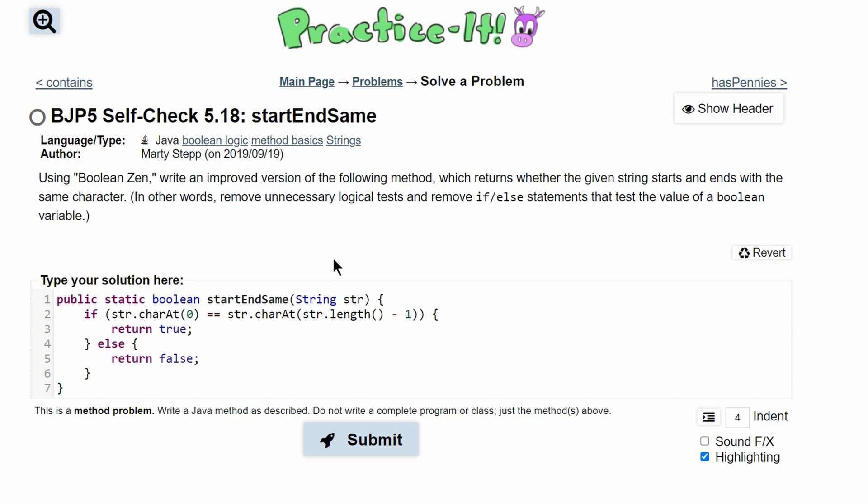For Practice-It! check 5.18 startEndSame, we have a boolean method that takes a string as parameter and returns a boolean. It should return true if the string's first and last character are the same, and false otherwise. However, we are not allowed to use if-else statements.